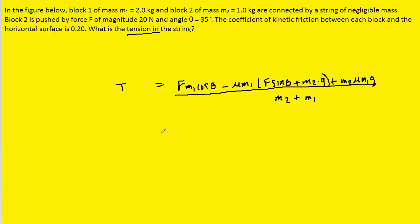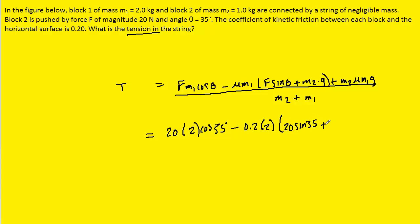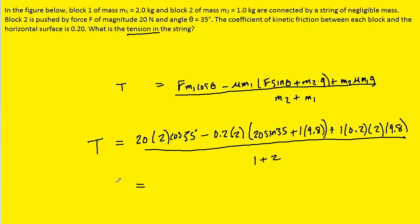And here we have the expression for tension. We can now just plug in the known values — the force was 20 newtons, m1 was 2 kilograms, the angle was 35 degrees, the coefficient of kinetic friction was 0.2, m2 was 1 kilogram, and g is 9.8. If we carefully plug that into our calculators, we should get about 9.4 newtons. So this is the correct answer for the tension in the string.